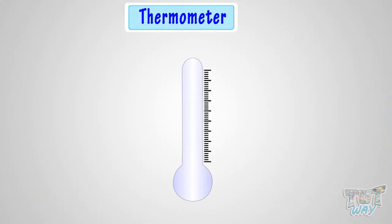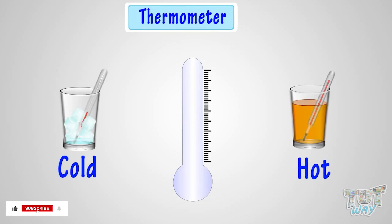Thermometer is a tool for measuring temperature or to know how cold or hot something is. It is a vertical number line.